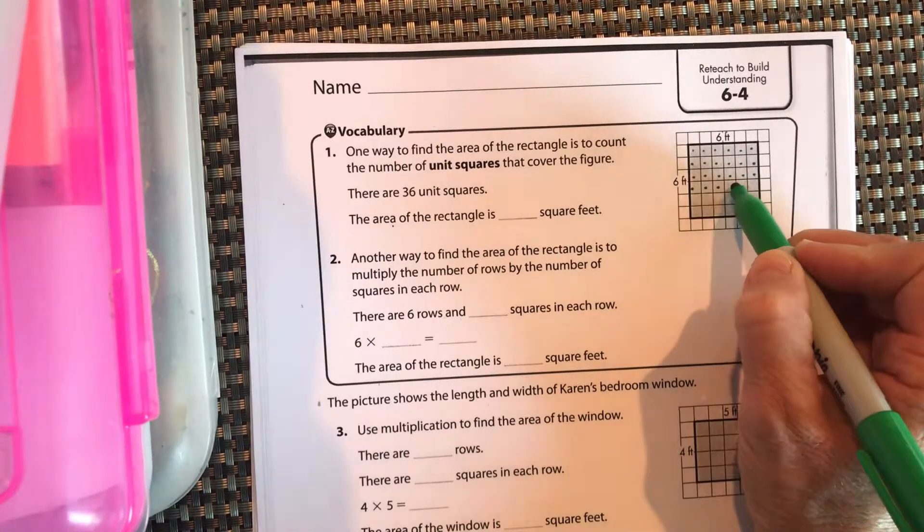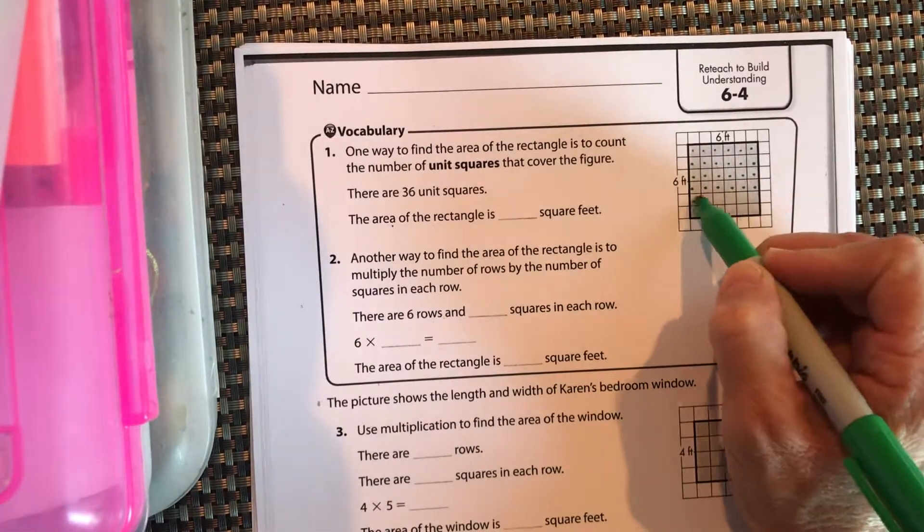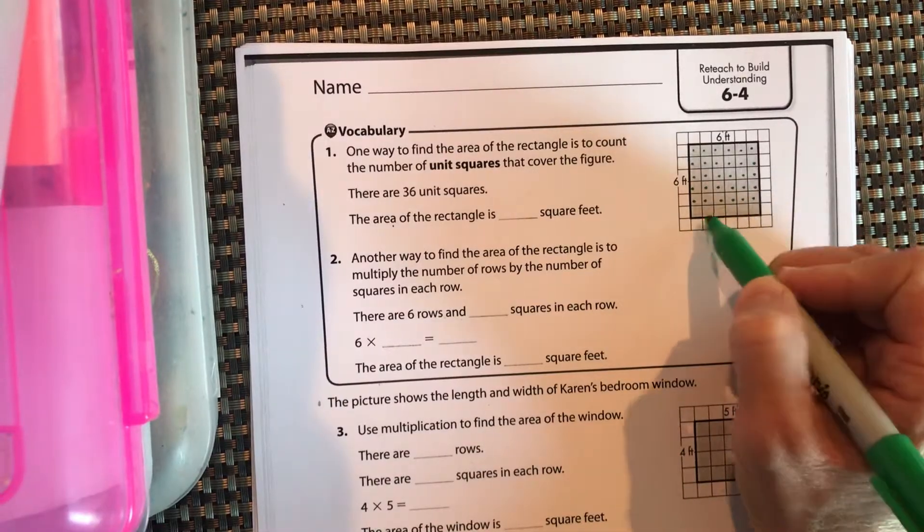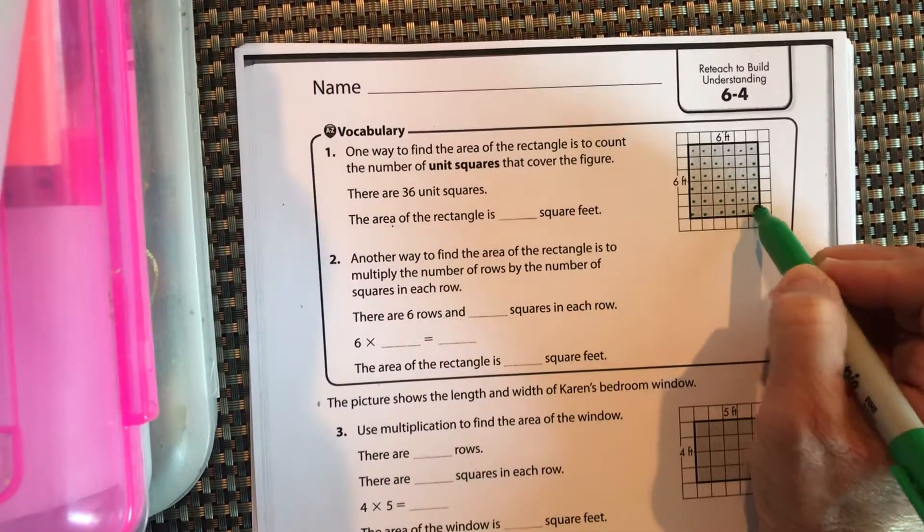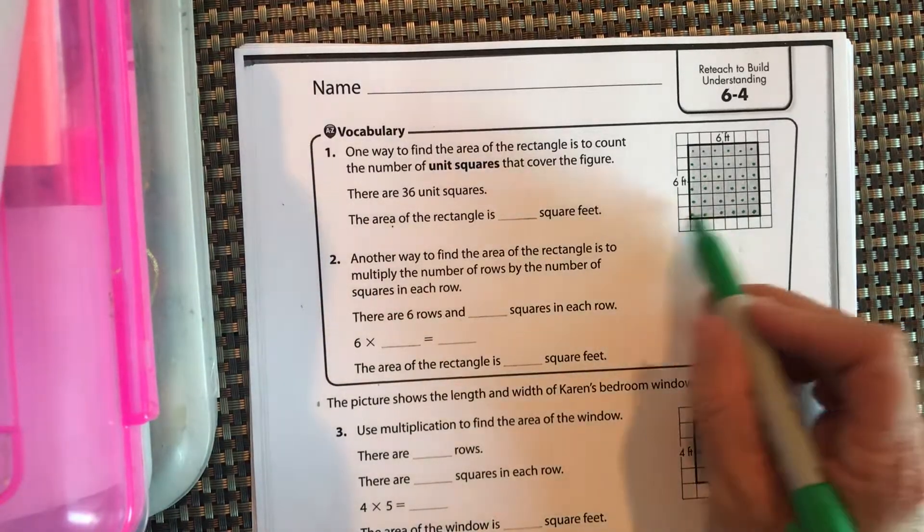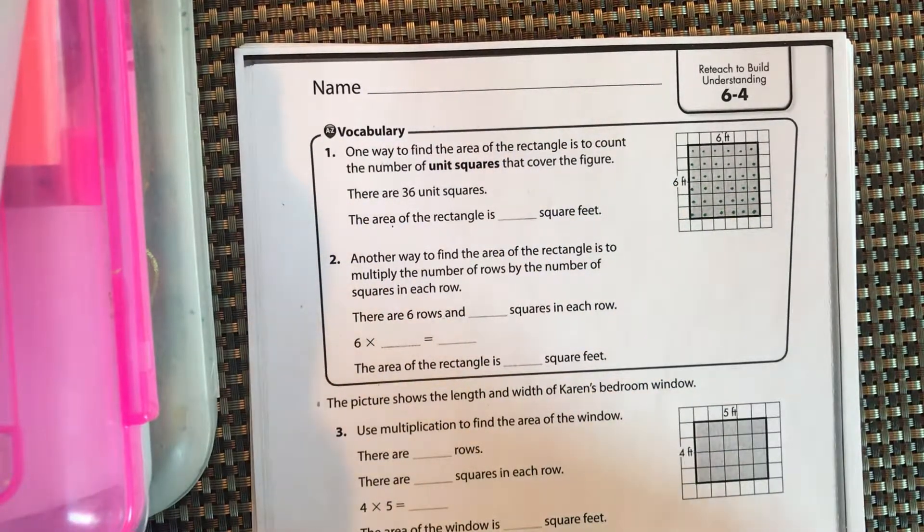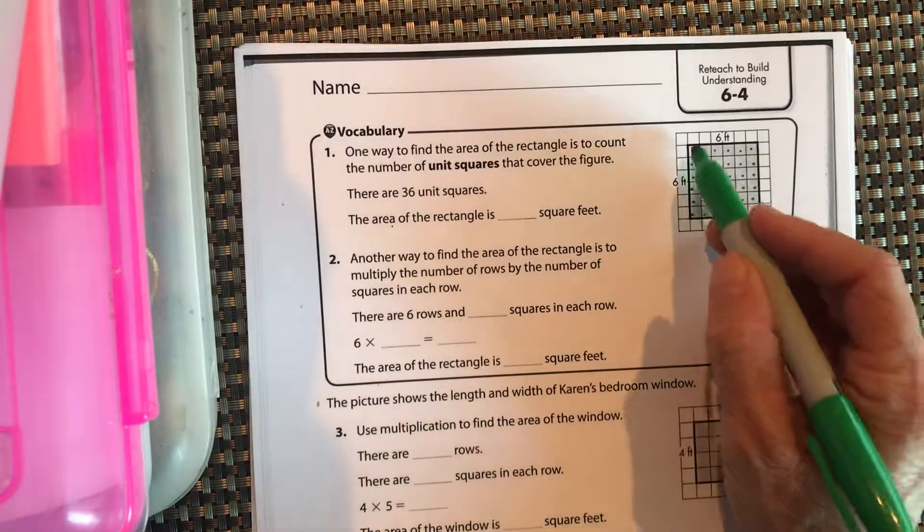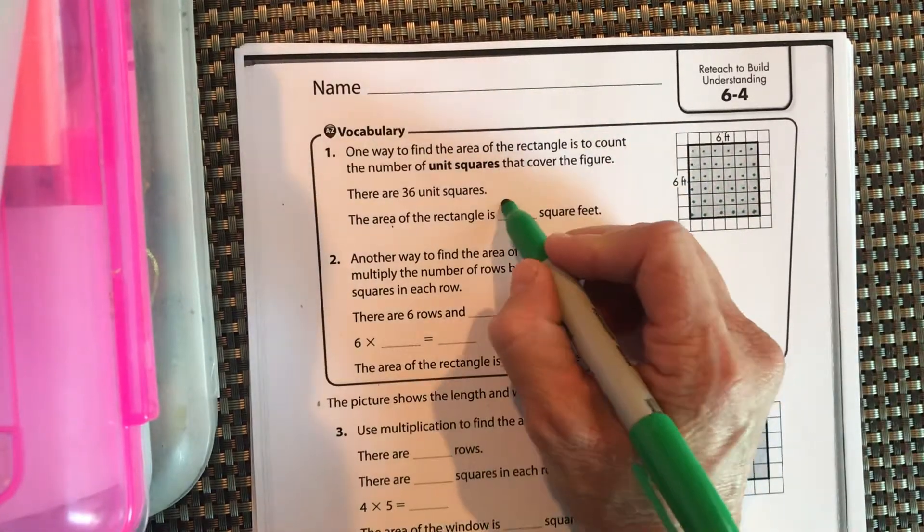18, 19, 20, 21, 22, 23, 24, 30, 36. This leaves a lot of room for mistakes because it's very easy to lose count when you're counting 36 times. But there are 36 squares in here, which means that it is 36 square feet.